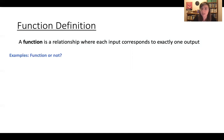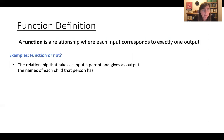Let's start. We're going to look at some examples and try to determine, is this a function? Is this not a function? So here's our first one. Let's consider the relationship that takes as input a parent and gives as output the names of each child that parent has. I'll have you pause and think about this for a moment. Turns out this relationship is not a function.